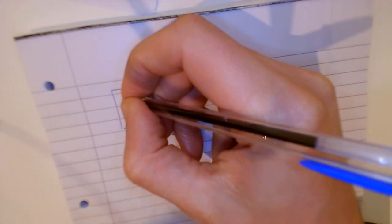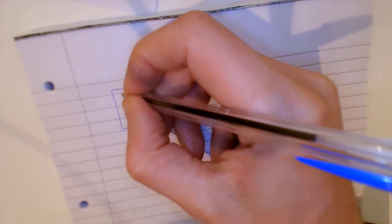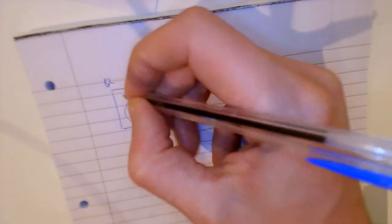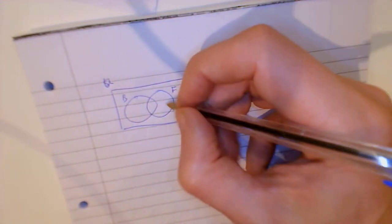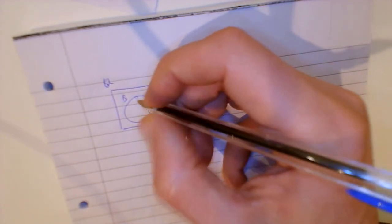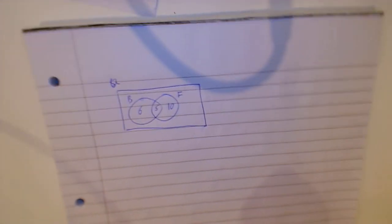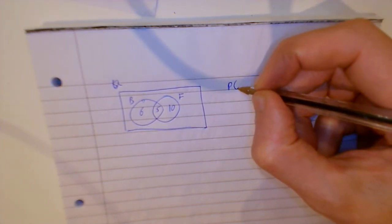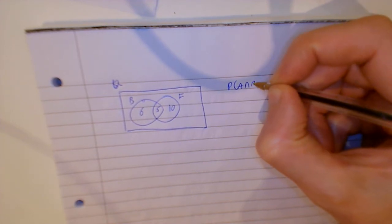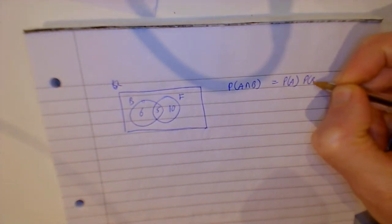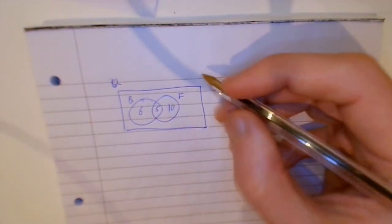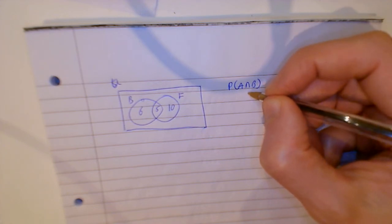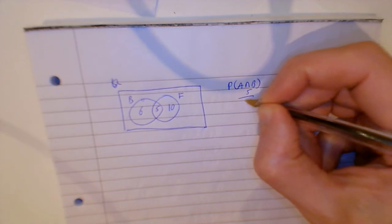We'll deal with a Venn diagram first. The diagram shows people who went to Brazil and France. Ted went to France, five went to both France and Brazil, and six went to Brazil only. We want to know: is this independent or not? If it's independent, P(F ∩ B) equals P(F) times P(B). The total is 21.